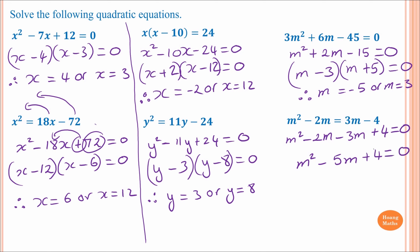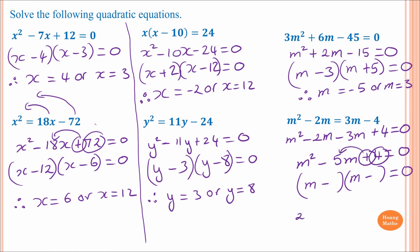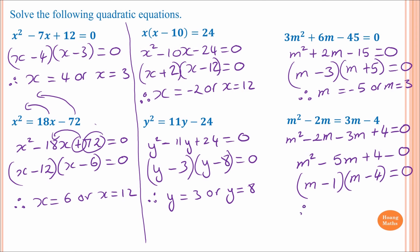To factorize, the sign is positive so both sides are the same: (m minus _)(m minus _) equals zero. Two numbers multiplied together must give 4 and add to give 5. 4 and 1: 4 times 1 is 4 and they add to 5. Both are negative so it doesn't matter where we put them — 1 here and 4 there. Therefore m equals 1 or m equals 4.